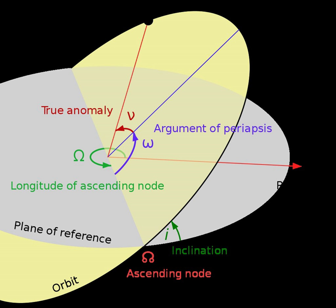The inclination is one of the six orbital elements describing the shape and orientation of a celestial orbit. It is the angle between the orbital plane and the plane of reference, normally stated in degrees.